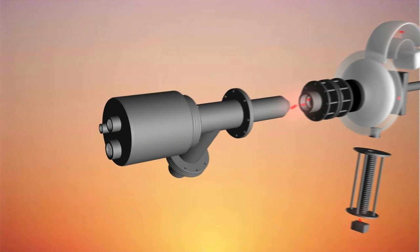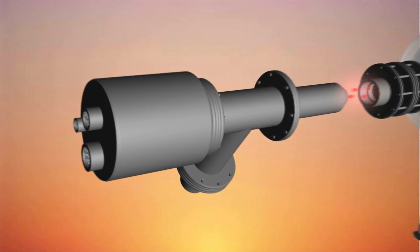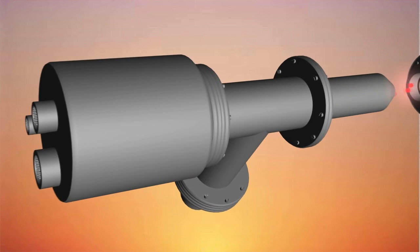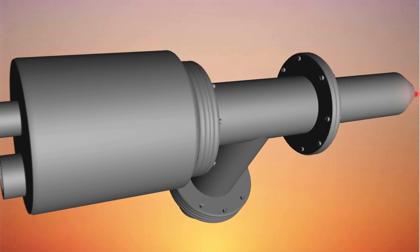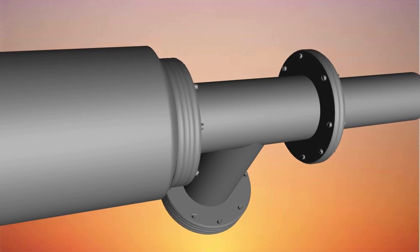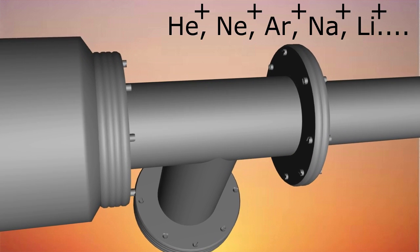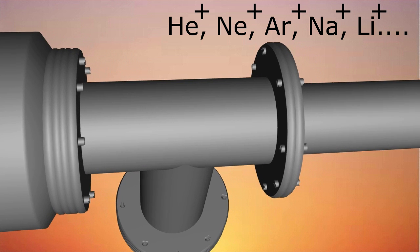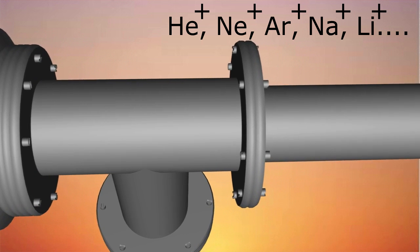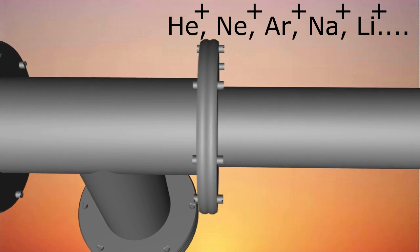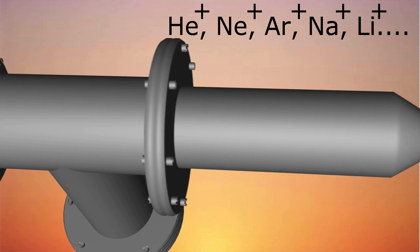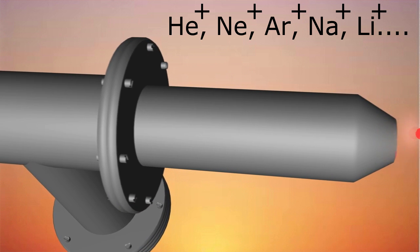As the name suggests, the ion gun's purpose is to shoot ions at the studied substrate. The most widely used ions for that purpose are ionized noble gas or alkali atoms. Noble gas, such as helium, neon, or argon, is ionized with electrons, giving them a positive charge. Alkali ion beams can be created by heating alkali wafers.